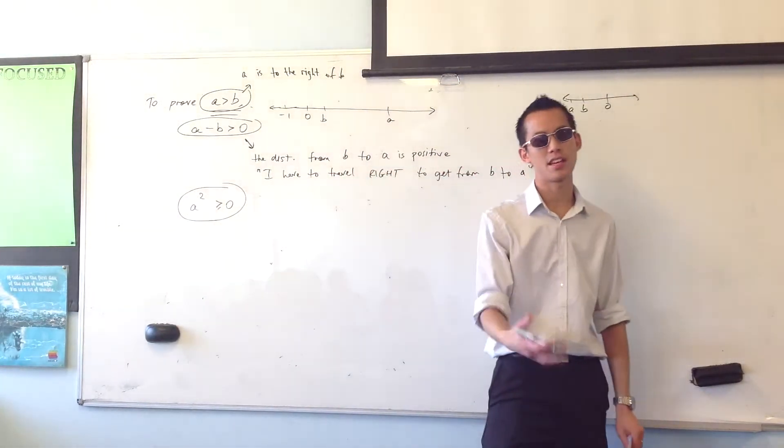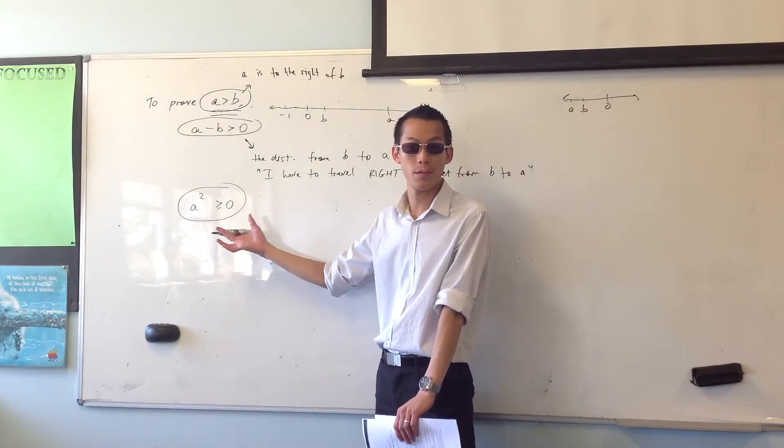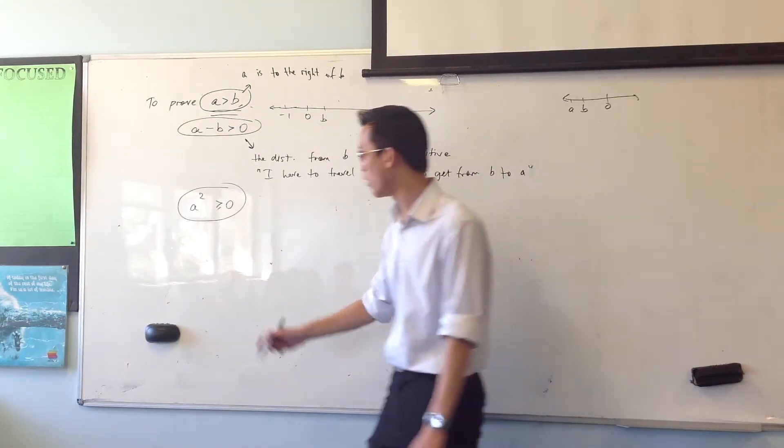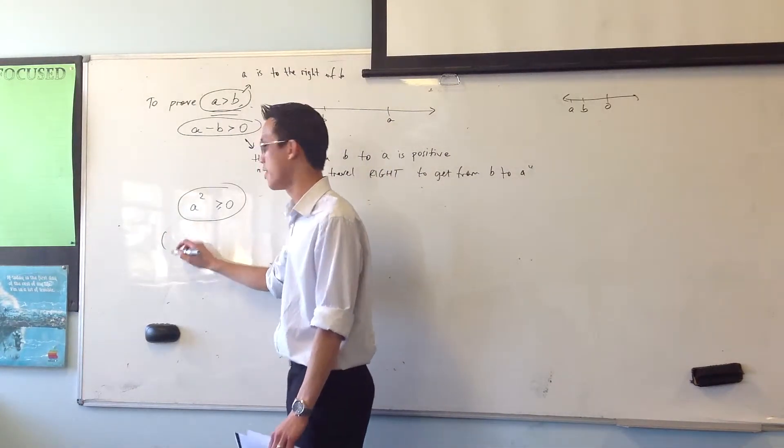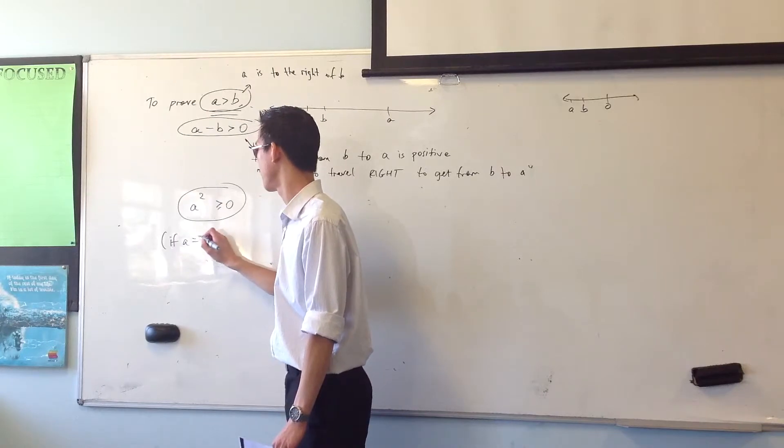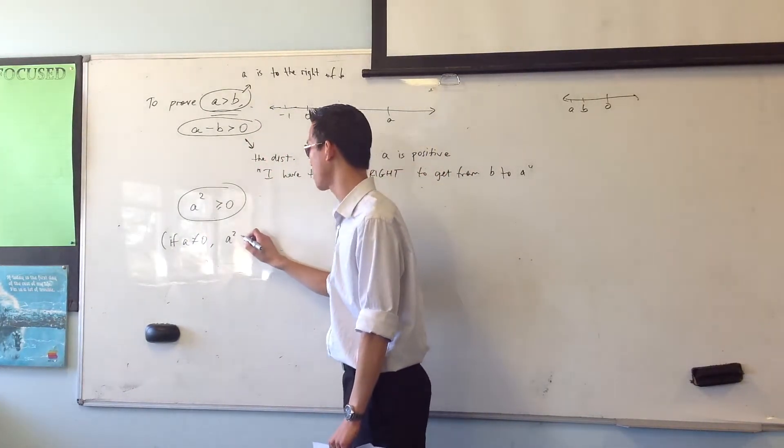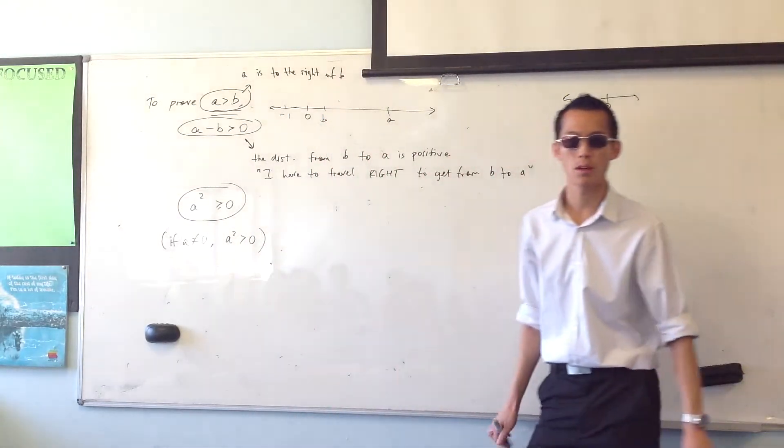If I can establish that something is square, then I can say that it's greater than or equal to zero. Right? And furthermore, if I already know that a isn't equal to zero, okay, then I can say that unequivocally, it must be positive when I square it. Okay? Does that make sense?